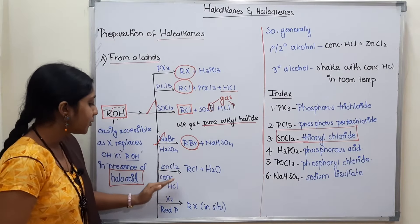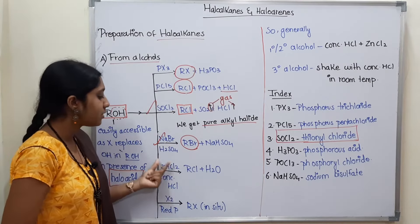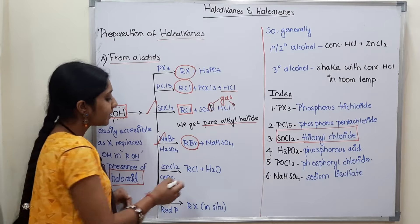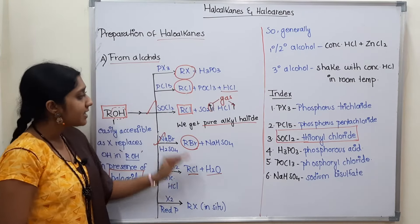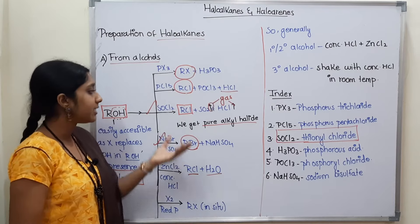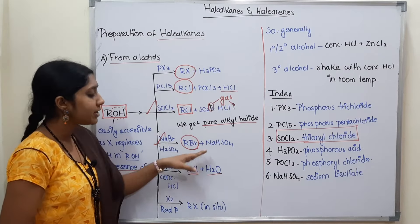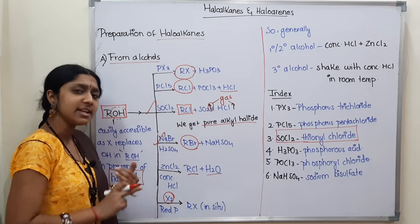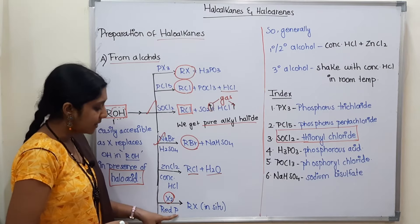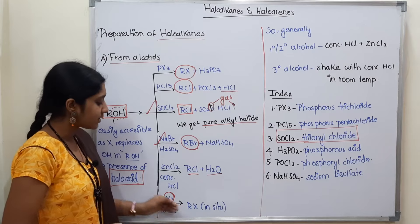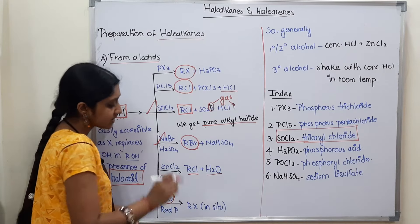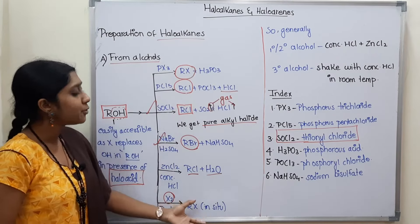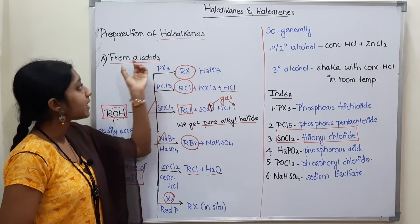The final method uses X₂ (halogen — Cl₂ or Br₂) along with red phosphorus. Red phosphorus acts as a catalyst. This gives RX as the product directly. These are the methods for preparation of haloalkanes from alcohol.